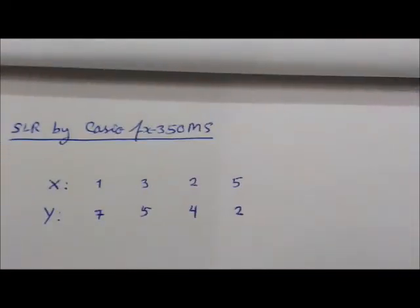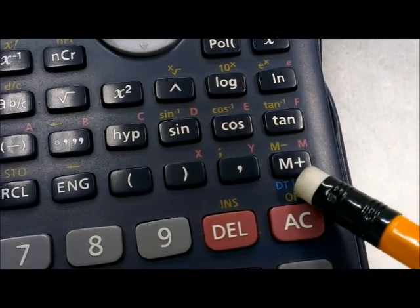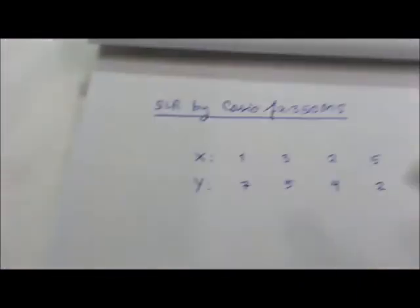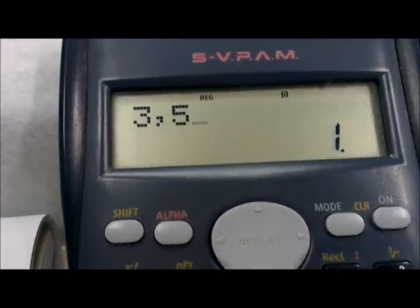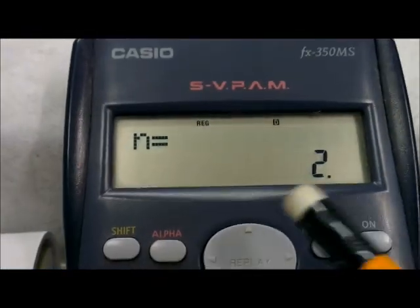For the first pair, press 1, comma, 7, then Enter and M+. You will see 'DT' indicating data entry, and n equals 1, confirming one pair is entered. For the next pair, x value is 3 and y value is 5 — press 3, comma, 5, check it's correct, then Enter and M+. Now two pairs are entered.